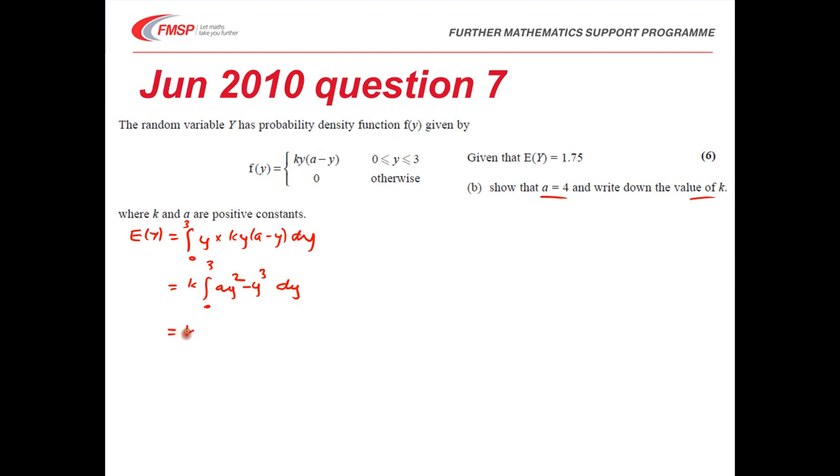Carrying out this integration is going to give me k lots of ay cubed on 3 minus y to the 4 on 4, between 0 and 3. And I know that that is going to give me a value of 1.75. So carrying on the calculation, that's going to give me 9a minus 81 over 4 equals 1.75.